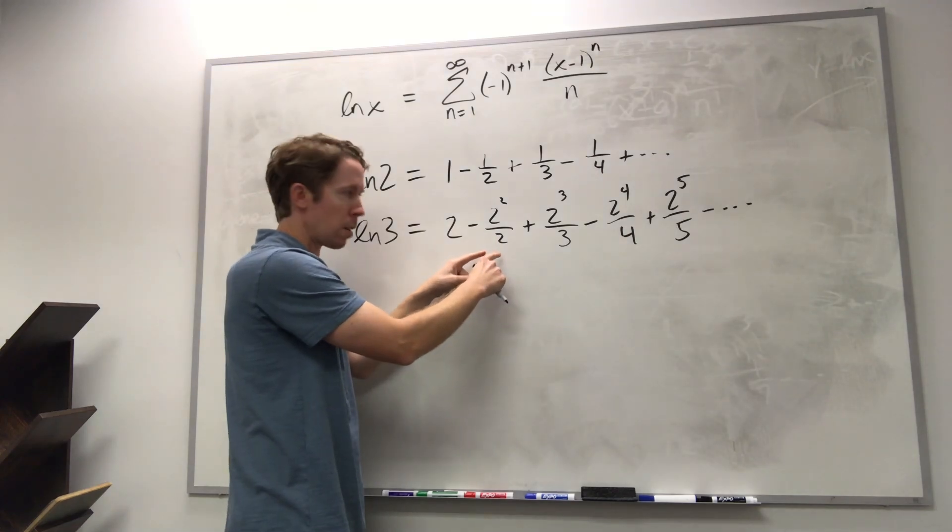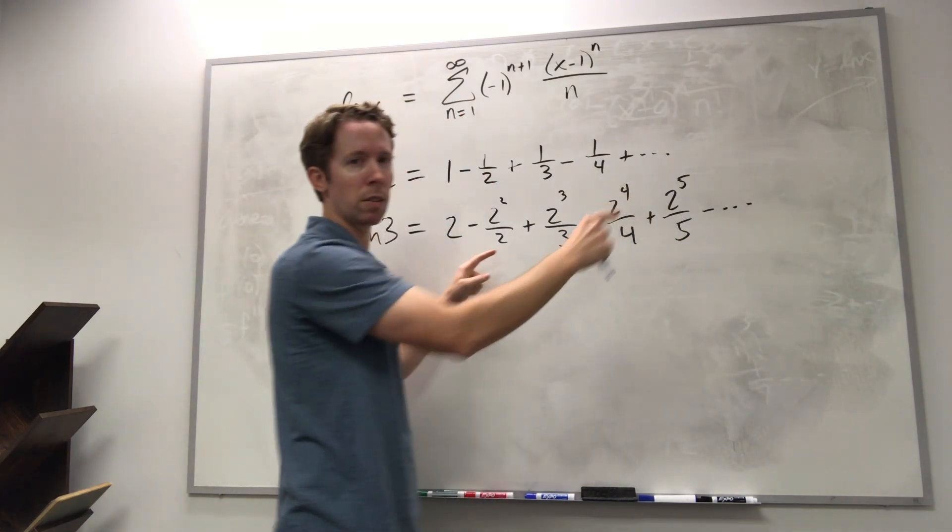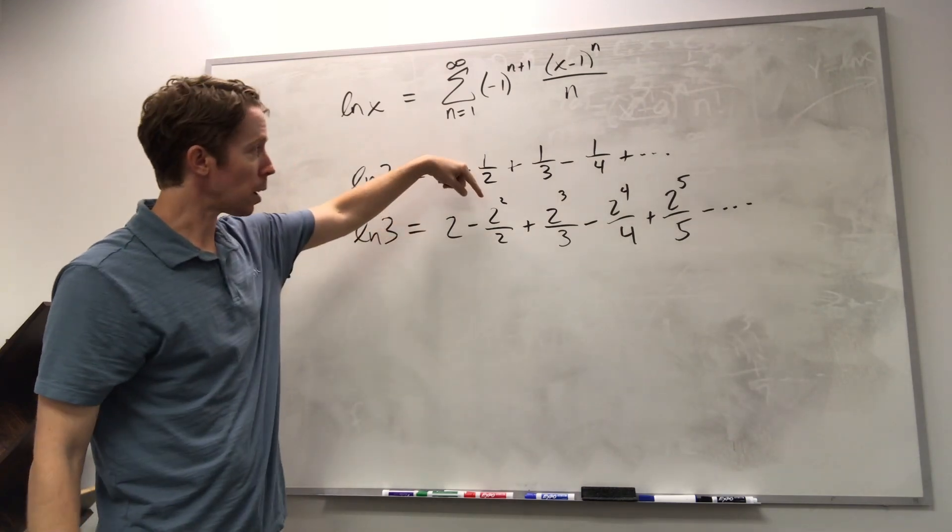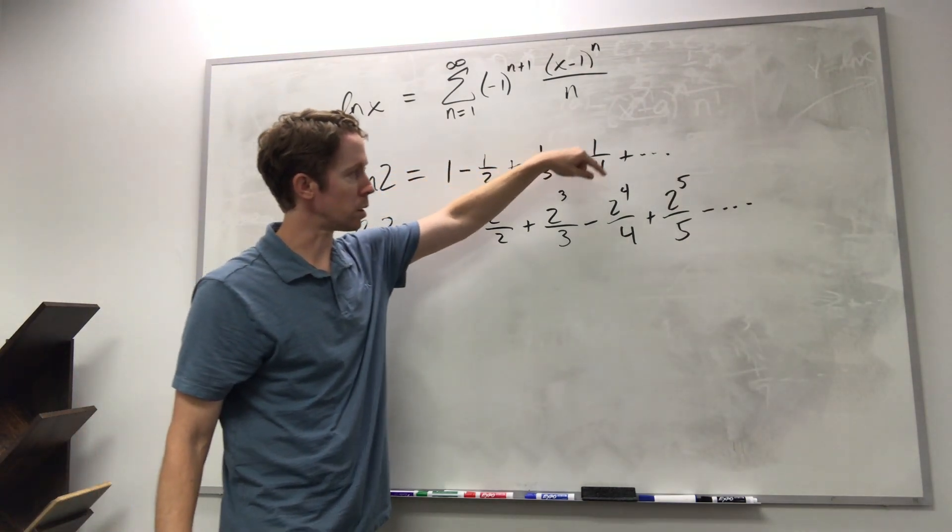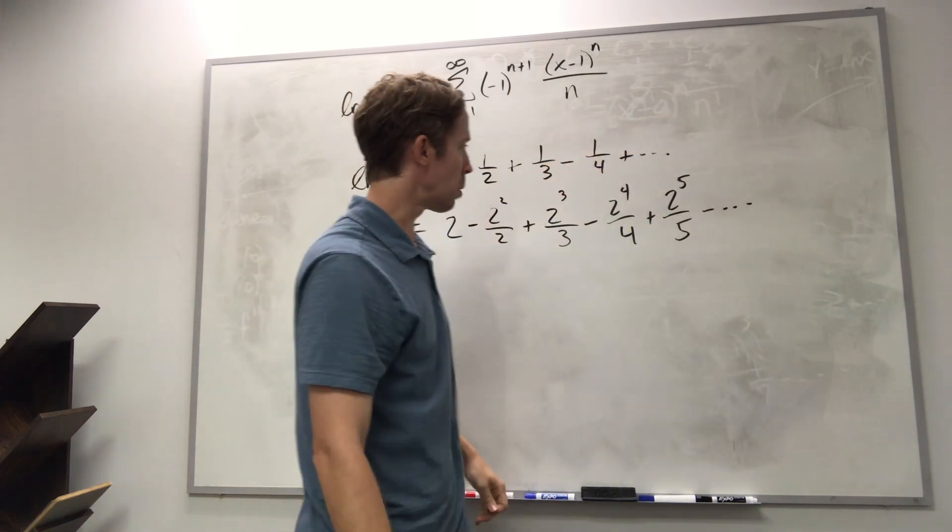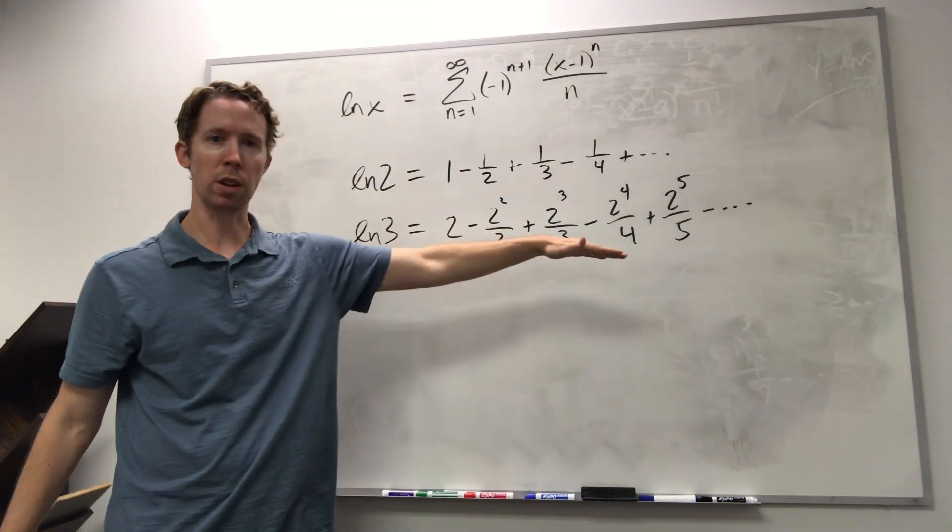So in the denominator, this is growing very slowly: two, three, four, five, six, seven, eight, nine, ten. In the top, I've got four, eight, sixteen, thirty-two. It's doubling each time, so obviously the numerator is growing way faster than the denominator.